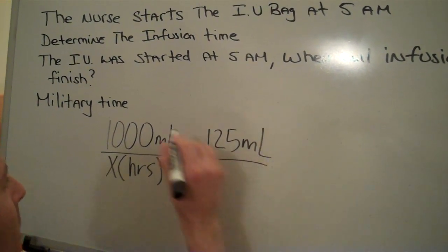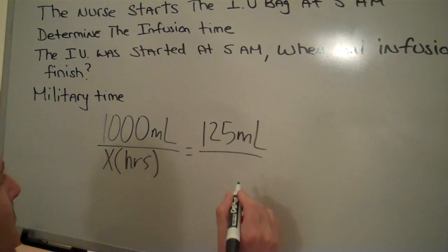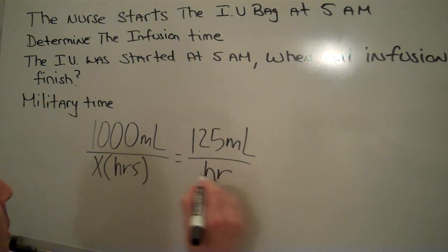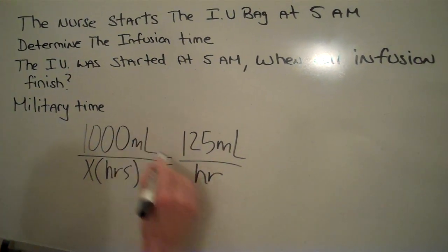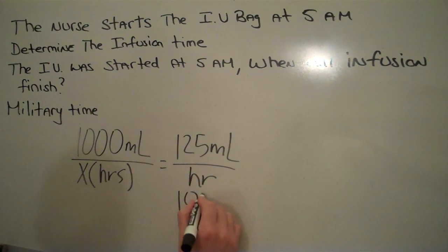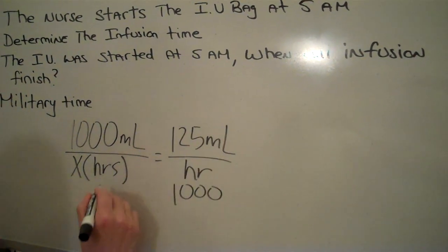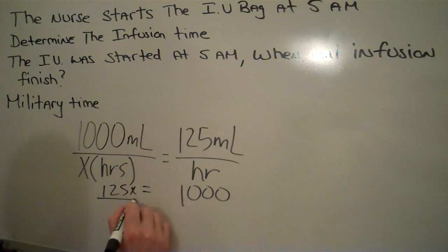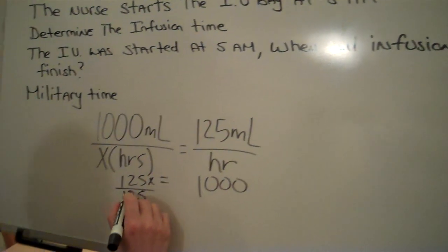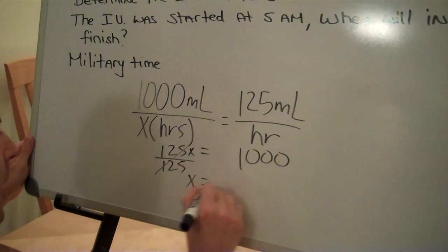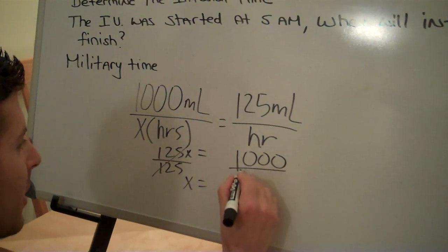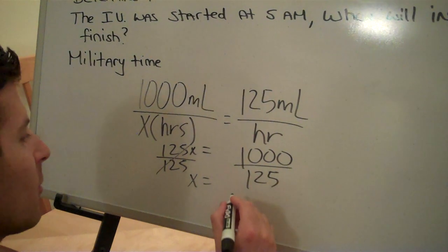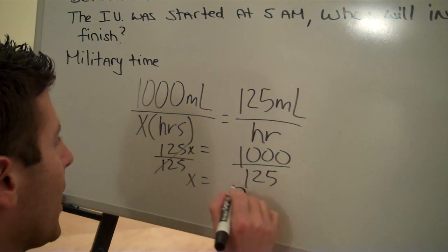As you can see, we have mLs over mLs — ratio and proportion — over an hour. We're going to cross multiply to get 1000 equals 125X. We're going to divide both sides by 125; they cross out. X equals 1000 over 125, and when you divide 125 into 1000 you get eight.